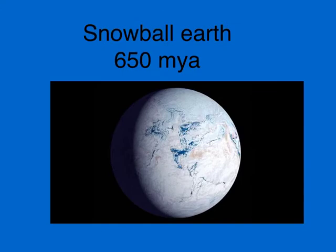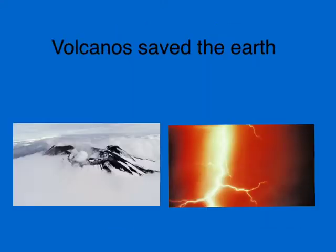About 650 million years ago, a very strange thing happened: the entire Earth was covered with ice — we call that Snowball Earth. It might have meant the end of life, except volcanoes peeked through the ice and saved the Earth. The volcanoes put carbon dioxide into the atmosphere, creating a greenhouse effect that captured heat from the sun and eventually cracked the ice.